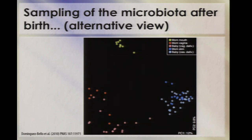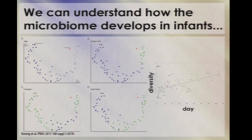We can also start to understand how the microbiome develops in infants. We see what looks on this scale like a very steady progression from the meconium towards the mother over the first two and a half years of life, coupled with a steady increase in diversity. Although all you can really see on this plot is change in resemblance to the mother's stool — it's hard to tell what's going on, and I'll return to this later.